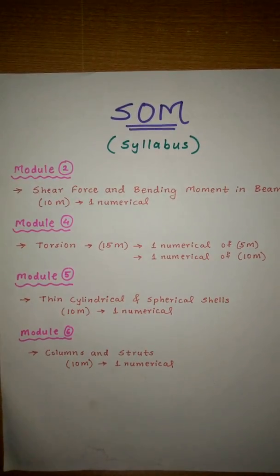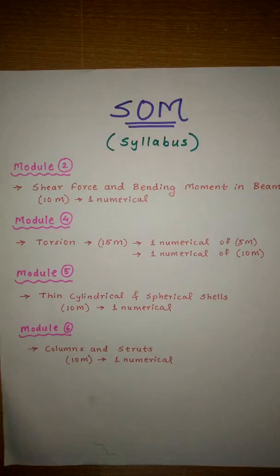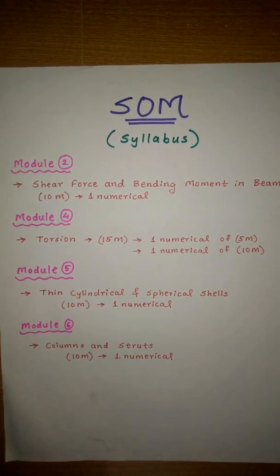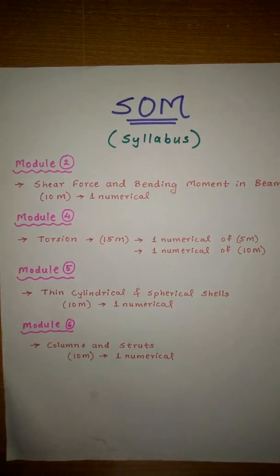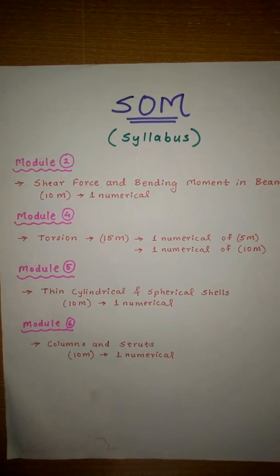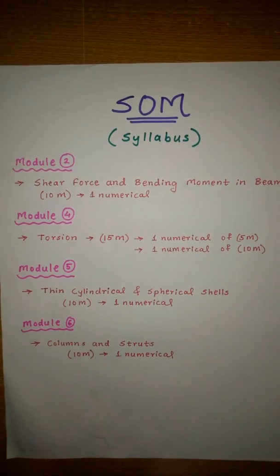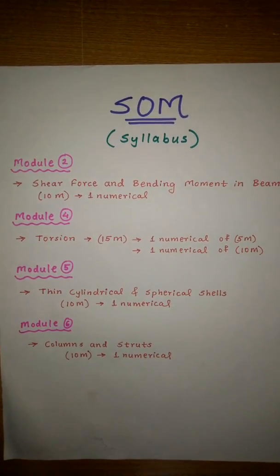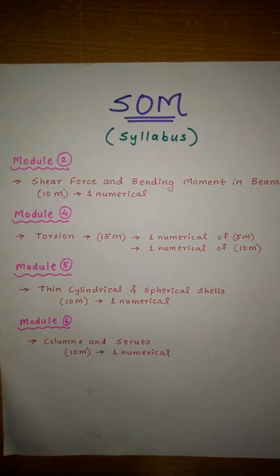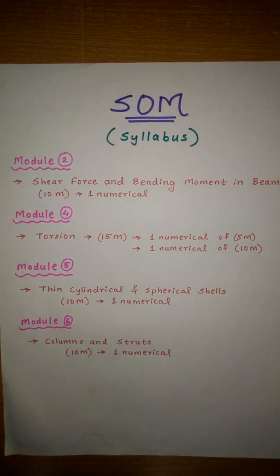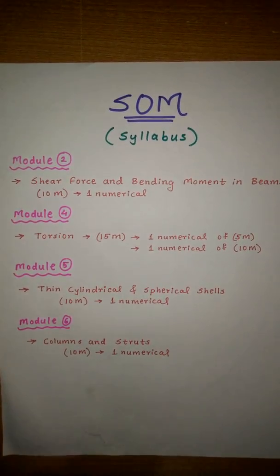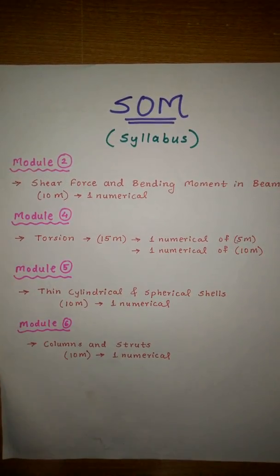Module 4 is the easiest module in the syllabus. You can easily get 15 marks. Module 4 contains two types of numericals which are totally formula based. You have to just work with 3 to 4 formulas and you can easily score 15 marks. Questions from this module: one question for 5 marks and question number 2 for 10 marks.